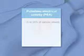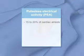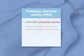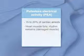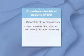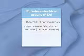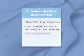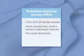PEA occurs in 15 to 20 percent of cardiac arrest cases. The heart muscle fails, although the electrical rhythm remains, usually indicating severely or terminally damaged heart muscle. It may also indicate that a patient has lost too much blood.